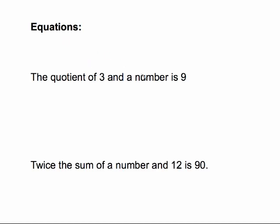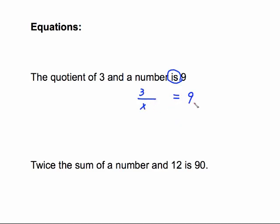We start dealing with equations when the sentence has an 'is' in it. It's the same process — work from the left all the way through — but 'is' becomes your equal sign. What's in front of 'is' goes on the left side, and what's after 'is' goes on the right side. 'The quotient of three and a number' — quotient means divide, draw the fraction bar, three on top because it came first, x on the bottom, and that equals nine.